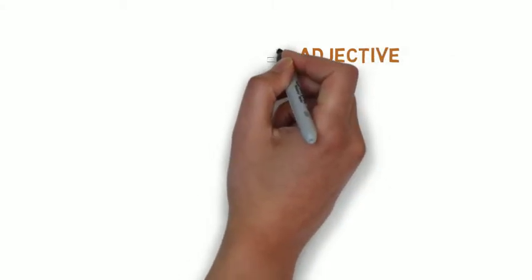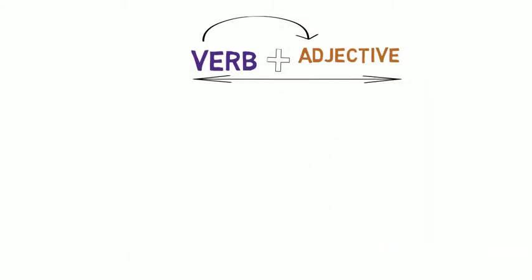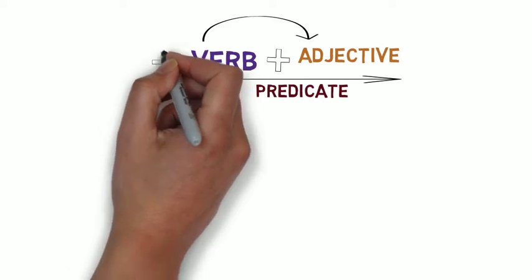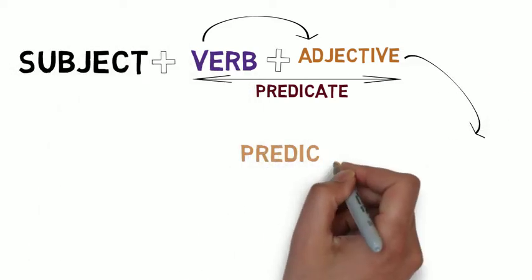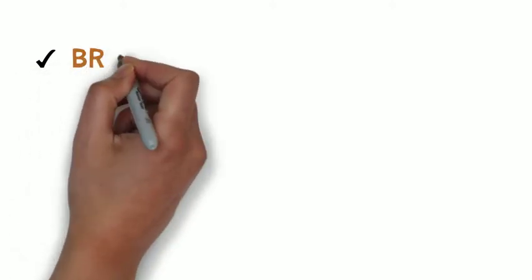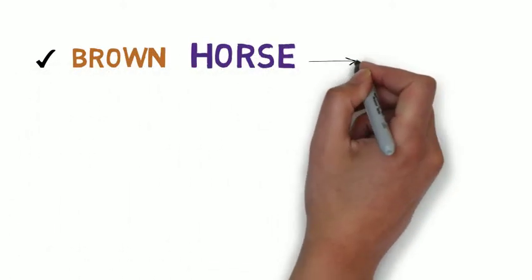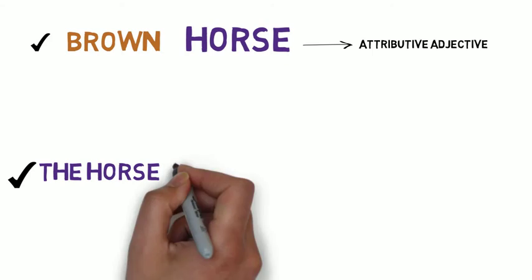Or, it's placed after a verb in the predicate, and it's called then predicative adjective. So, instead of brown horse, you can say the horse is brown.